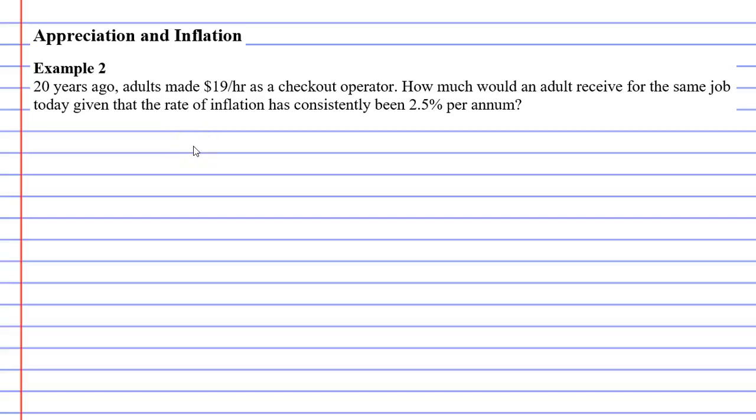In this video we're going to complete example two, which says that 20 years ago adults made $19 an hour as a checkout operator. How much would an adult receive for the same job today given that the rate of inflation has consistently been 2.5% per annum?